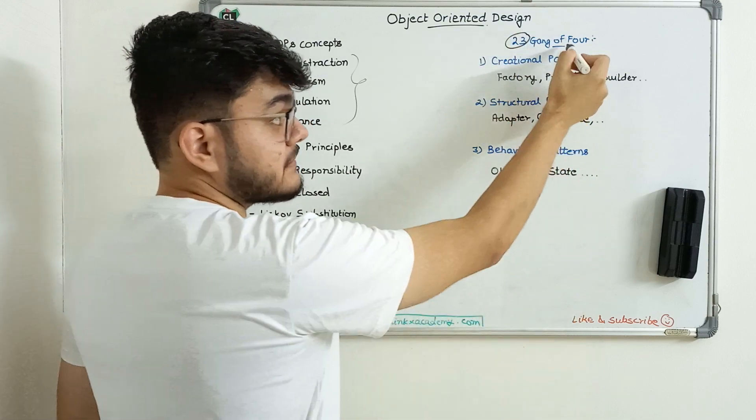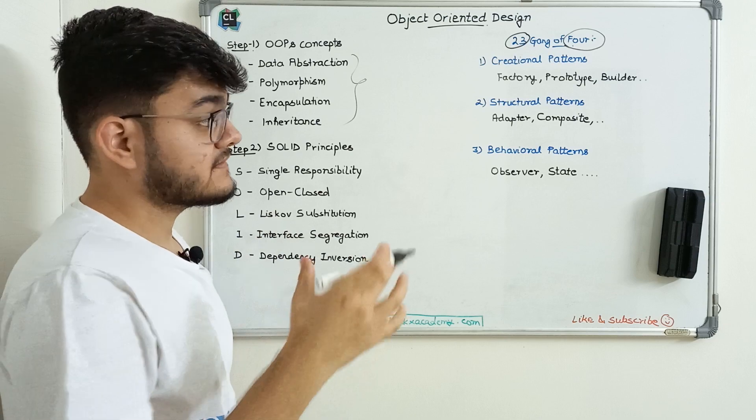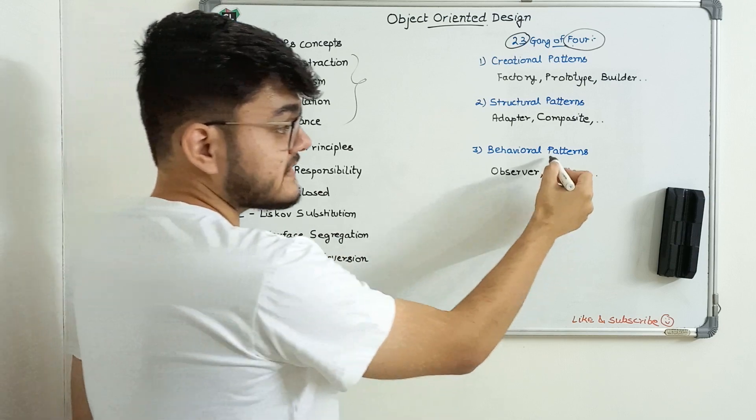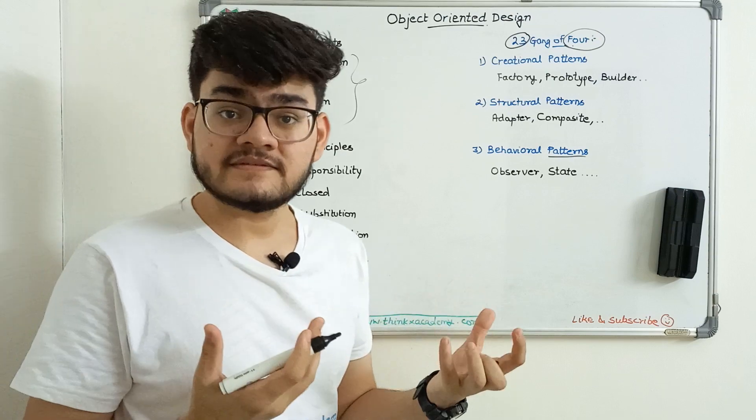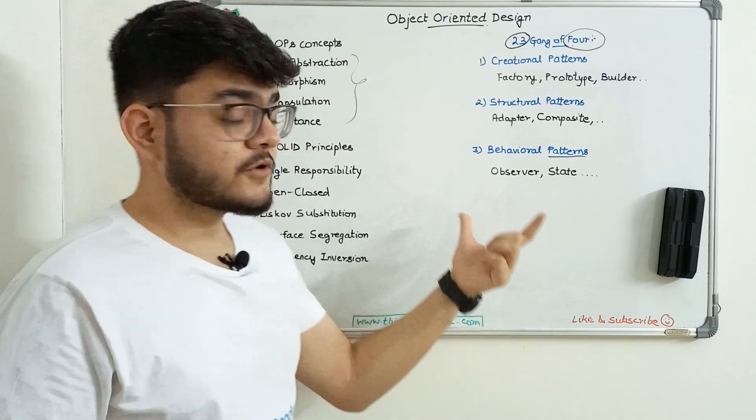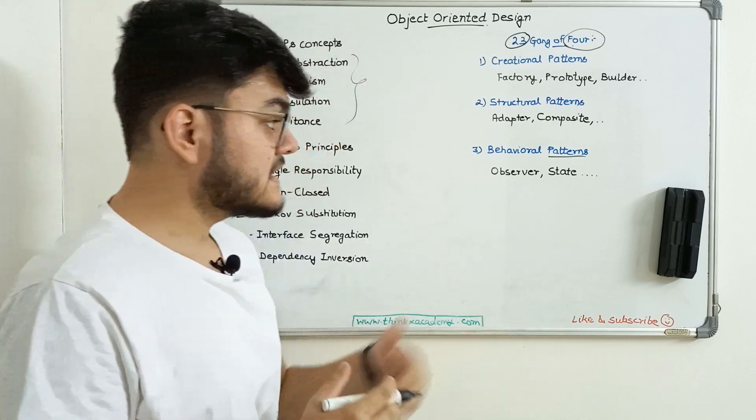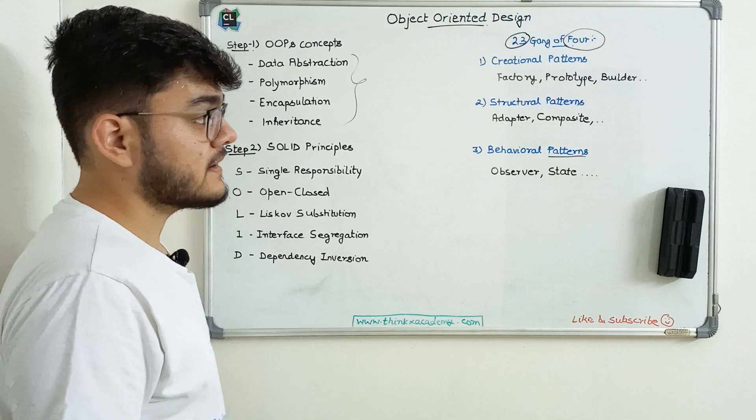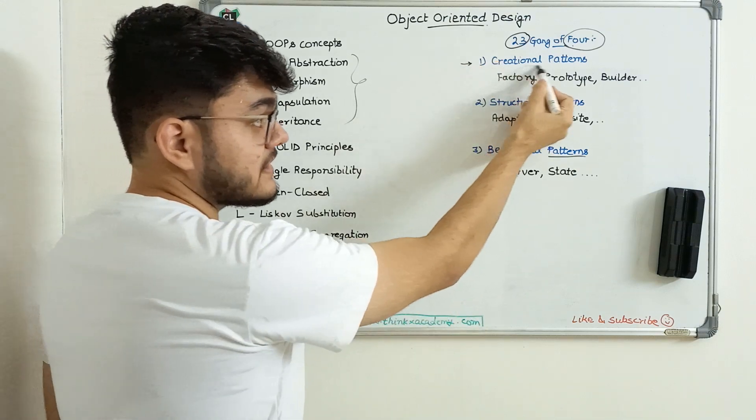These 23 patterns were created by four developers who took their experience and designed it into patterns. A pattern is a generalized form of problem solving. If you face a problem occurring many times in the code base, they've given patterns. They're divided into three categories, starting with creational patterns.